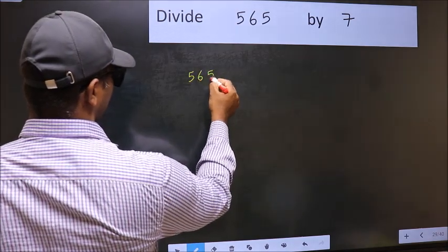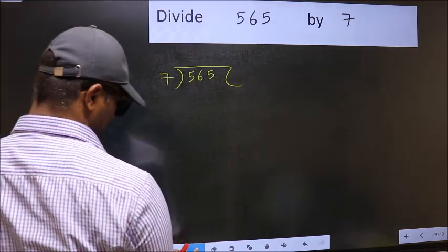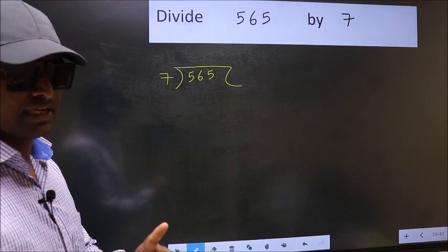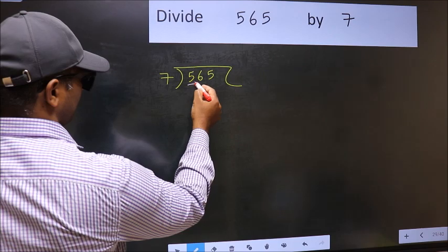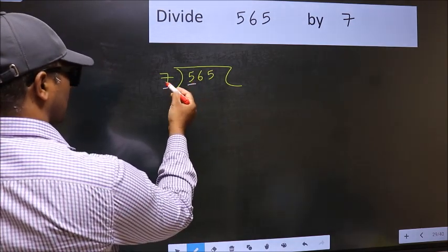565 and 7 here. This is your step 1. Next, here we have 5 and here 7. 5 is smaller than 7.